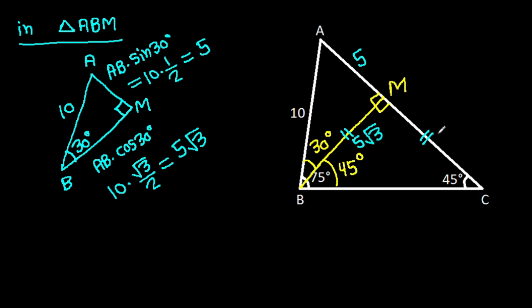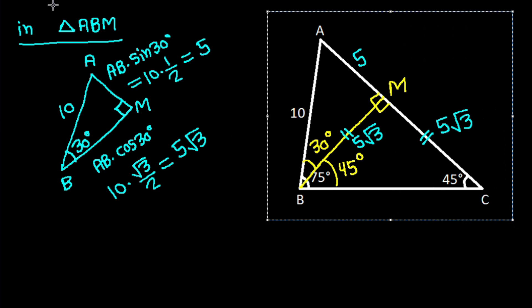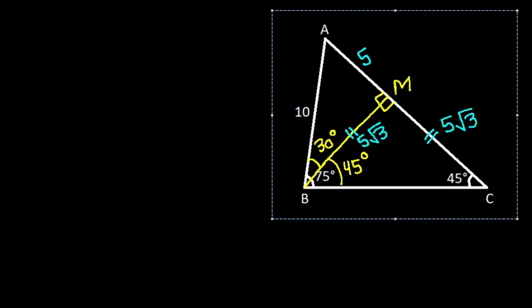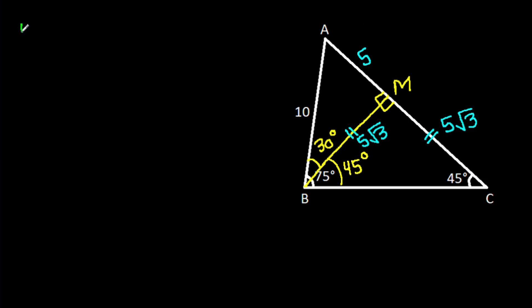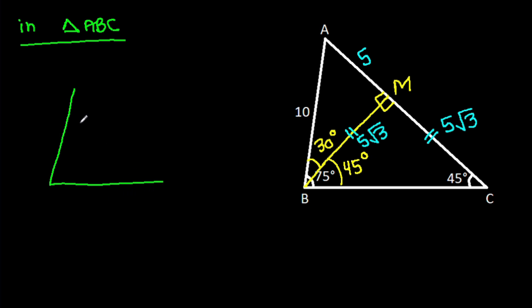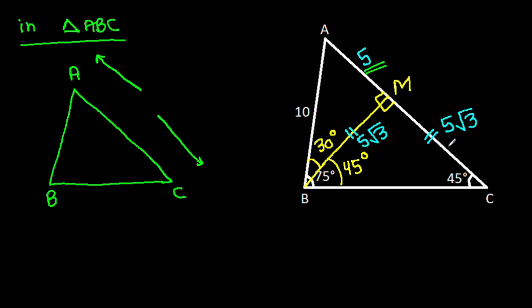BM is 5 root 3, so CM will also be 5 root 3. Therefore AC equals AM plus CM, which is 5 plus 5 root 3, and BM is 5 root 3.